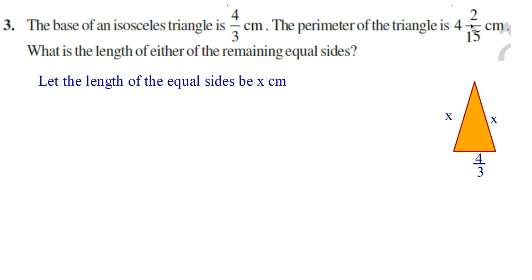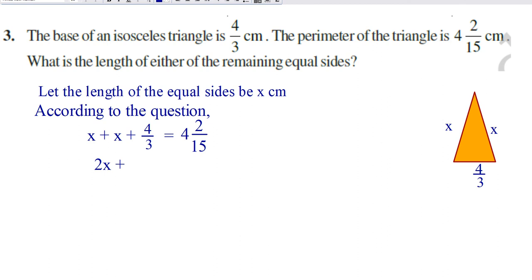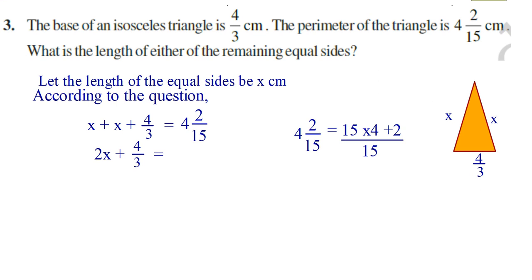Perimeter is given as 4 and 2/15. Perimeter means the sum of the 3 sides. According to the question: x plus x plus 4/3 is equal to 4 and 2/15. Now x plus x is 2x, so 2x plus 4/3 is equal to 4 and 2/15. Converting 4 and 2/15: that is (15 times 4 plus 2) divided by 15, which is 62/15.